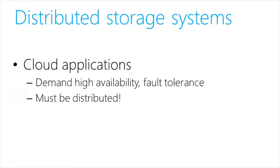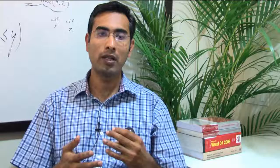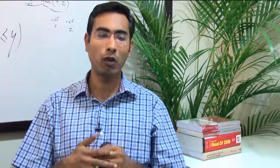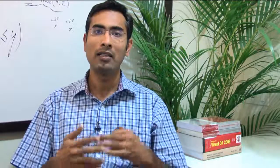Cloud applications, on the other hand — the Facebooks and the eBays — demand very high availability. Every time a user connects to an application, they expect a response. So cloud applications must be designed to be both highly available and fault tolerant, which means the storage systems cannot be single centralized monolithic databases. The storage systems must themselves be distributed and designed to be highly available. So these are sort of conflicting goals, and one of the questions we are asking is how do you bridge the divide — how do you design the next generation of storage systems that give you the look and feel of a single powerful machine, but at the back end are truly distributed?